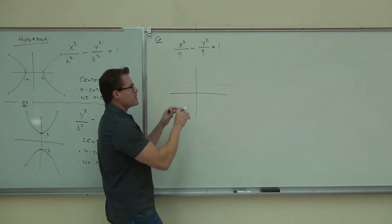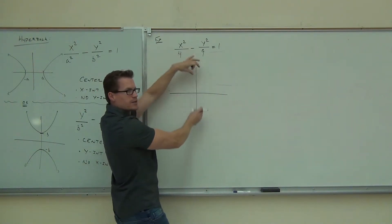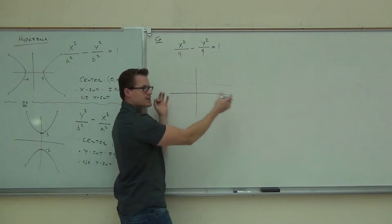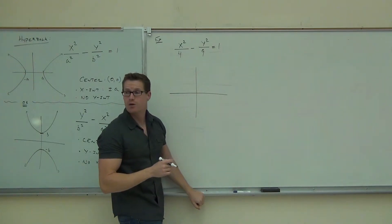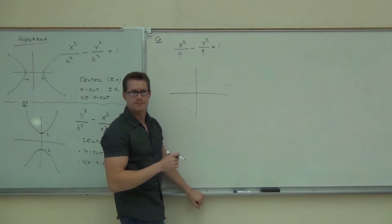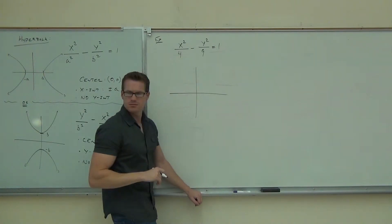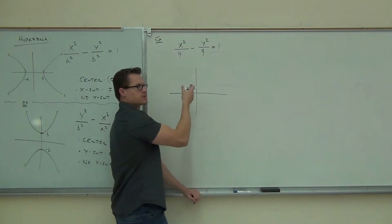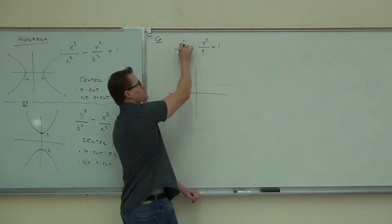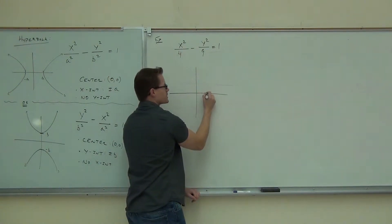So, if we know we're spreading out this way, are we going to have any Y intercepts? No. Are we going to have X intercepts? Yes. How do you find your X intercepts? Square root of Y40. Why are we looking at the 9? Because there's no Y intercepts. We just have X. We know that whatever comes first, that's giving us our intercepts.